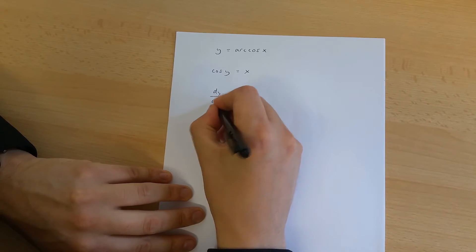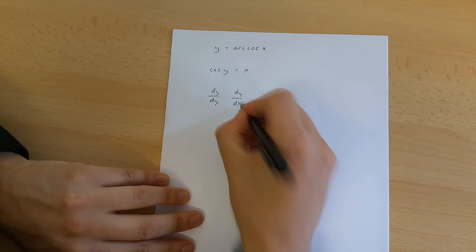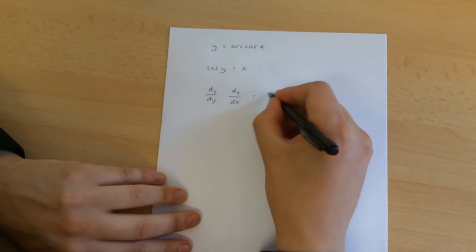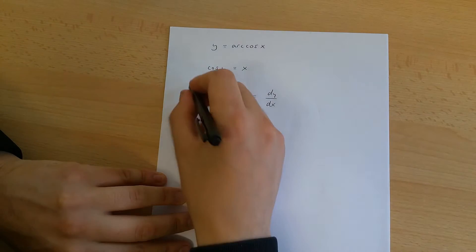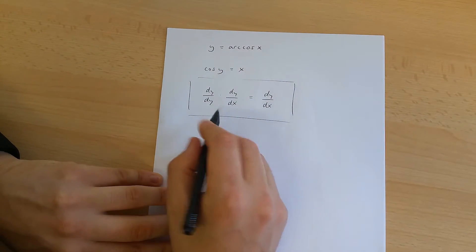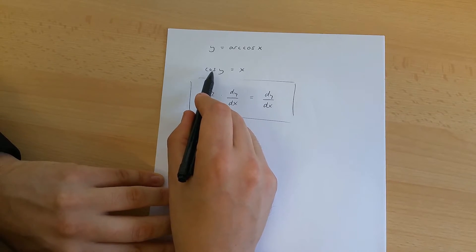Now, we know that dy over dy times dy over dx is equal to dy over dx. And we are going to use this formula to differentiate this side of this equation.